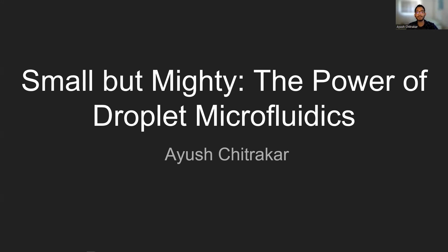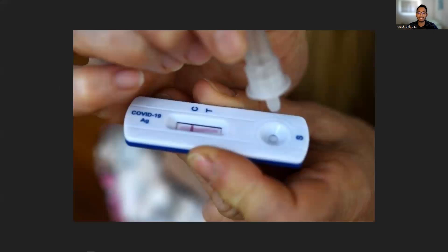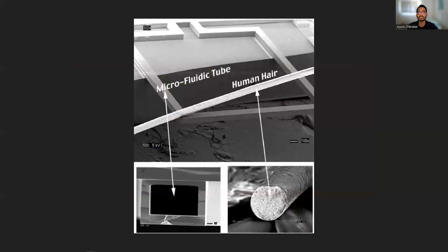Believe it or not, most of you have probably interacted with or at least heard of a microfluidic device. Rapid COVID-19 tests are a form of microfluidic device and were crucial in helping reduce the spread of COVID. So what are microfluidic devices? Simply put, they are devices that manipulate very small volumes of liquid to perform an experiment. These devices have channels that are as small as the diameter of a human hair, as you can see here.